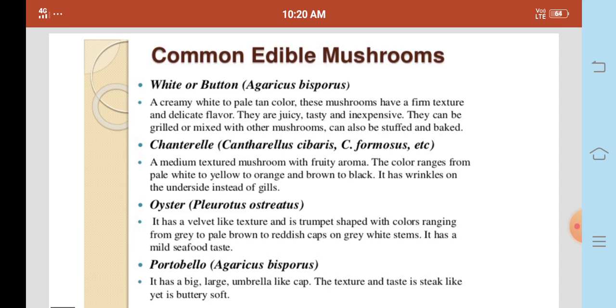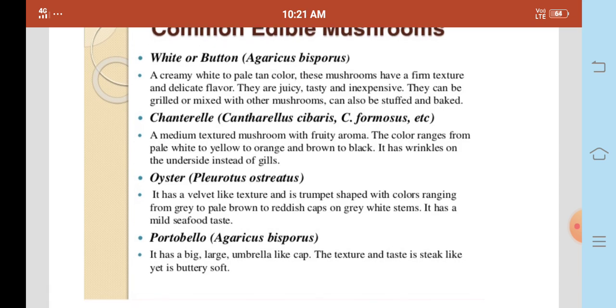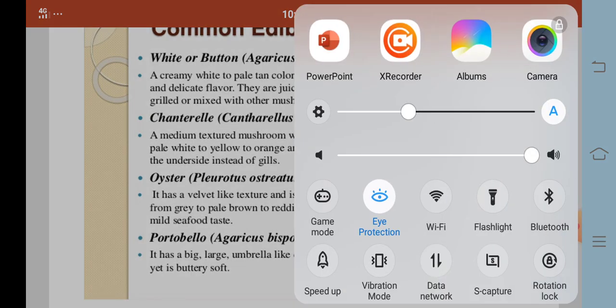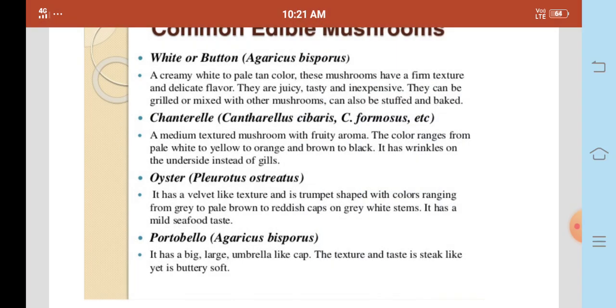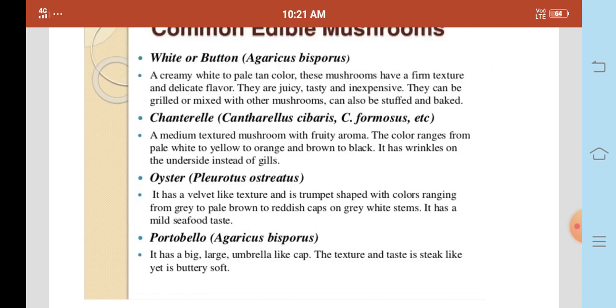It has wrinkles on the underside instead of gills. It has a velvet-like texture and is trumpet shaped with colors ranging from grey to pale brown to reddish caps on grey and white stems. It has a mild seafood taste.